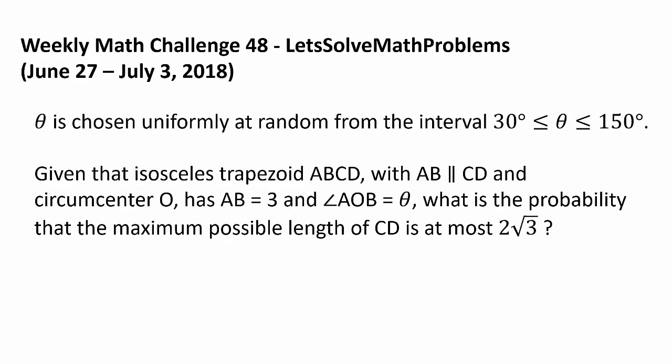Theta is chosen uniformly at random from the interval 30 degrees to 150 degrees. Given that isosceles trapezoid ABCD with AB parallel to CD, and circumcenter O has AB equal to 3, and angle AOB measuring theta, what is the probability that the maximum possible length of CD is at most 2 times square root of 3?